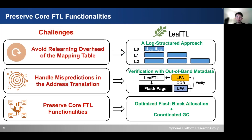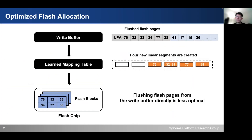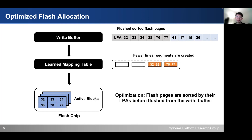Finally, I'll talk about how we preserve core FTL functionalities with optimized flash allocation and coordinated garbage collection. SSD maintains a write buffer that groups multiple flash pages together before flushing to empty flash blocks. However, directly flushing the flash pages from the write buffer is less optimal for the learned mapping table, because sequential mapping table entries could be divided into different learned index segments. Therefore, we perform a simple but effective optimization: before flushing, we sort the flash pages by their logical page address. This creates monotonic address mapping patterns and helps reduce the number of learned index segments being created.